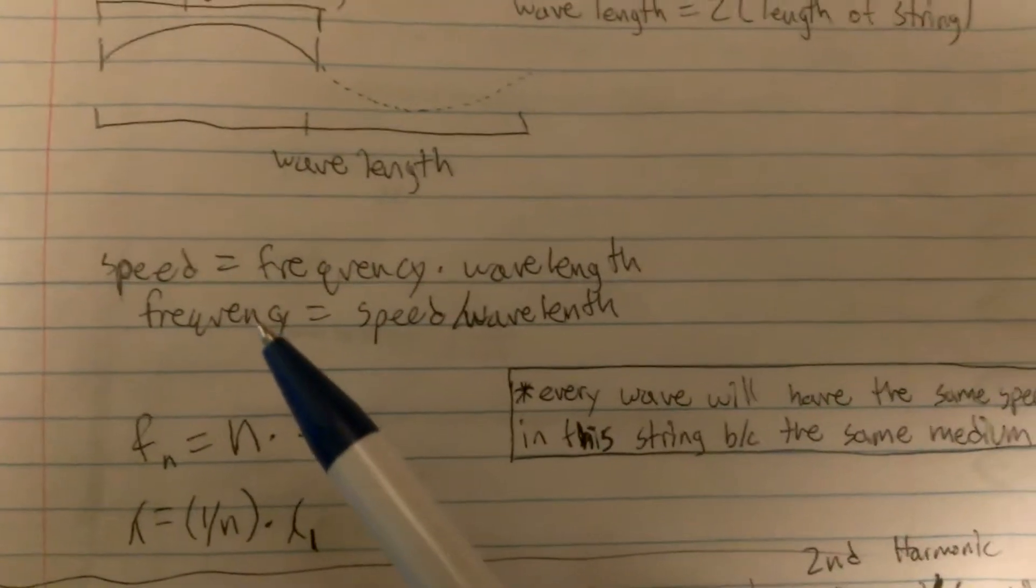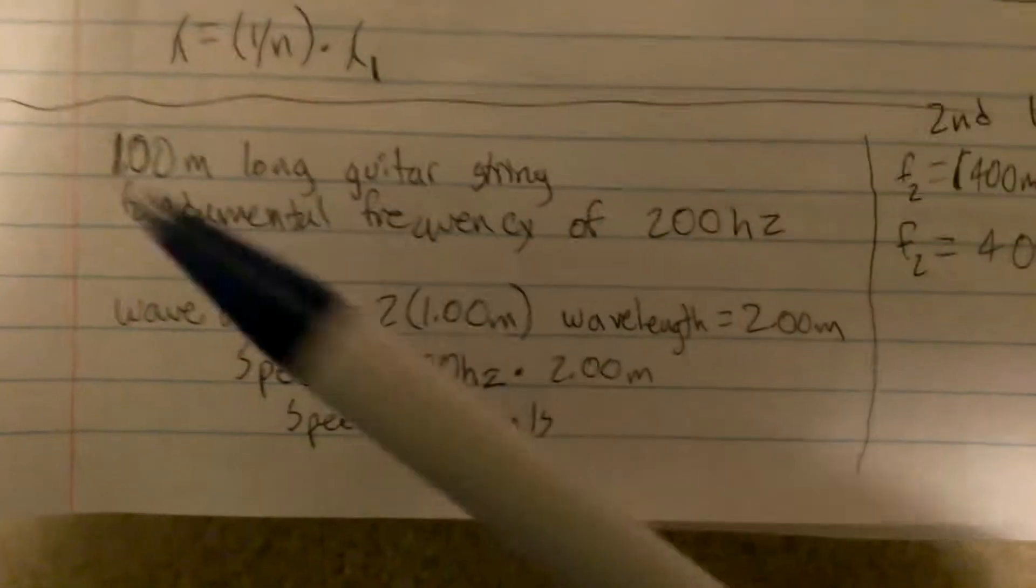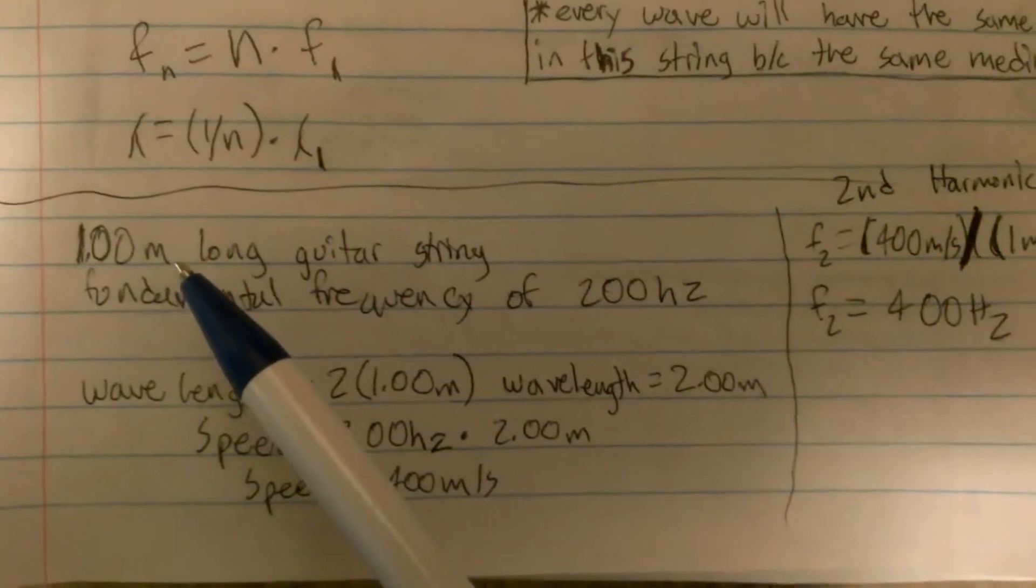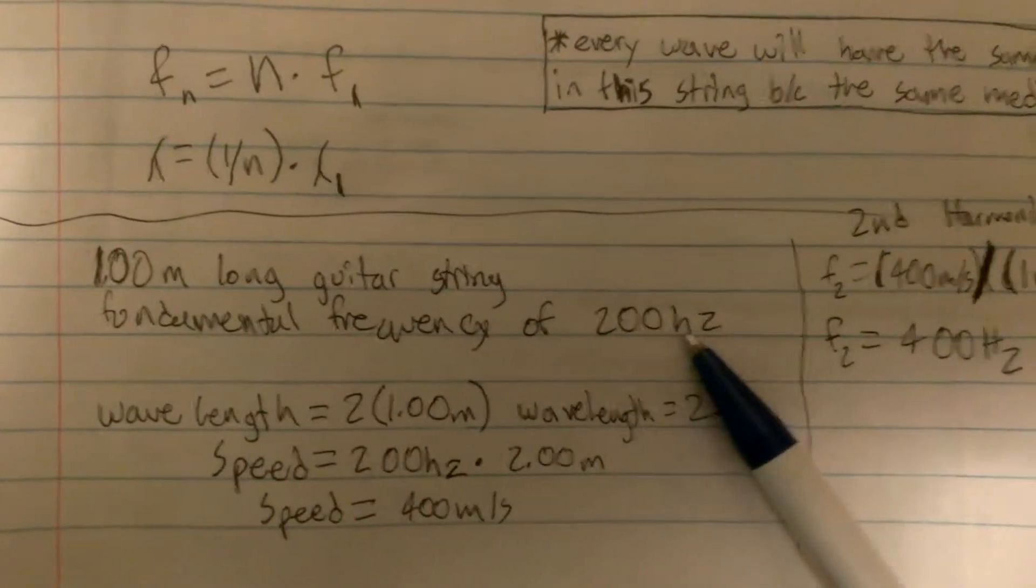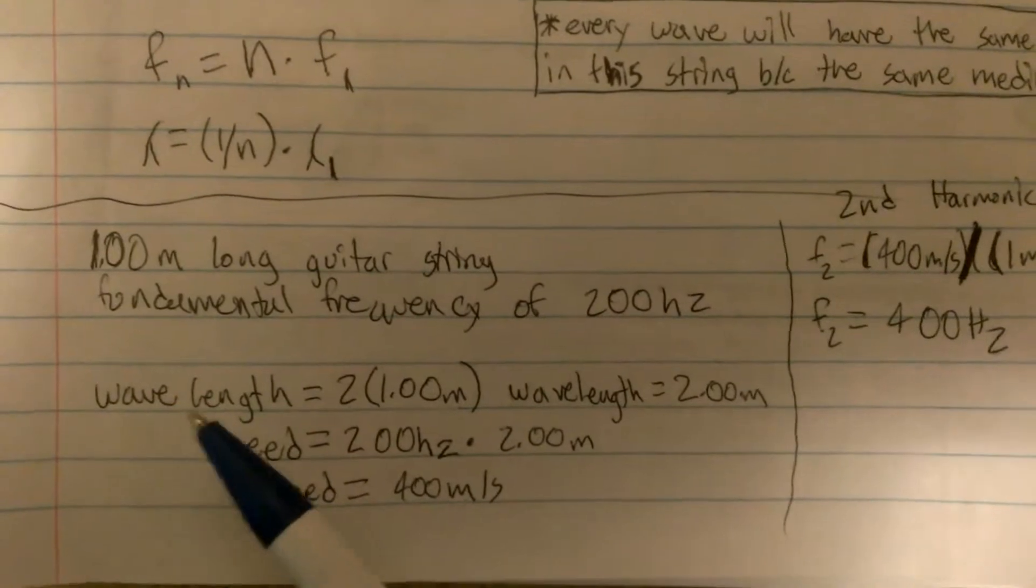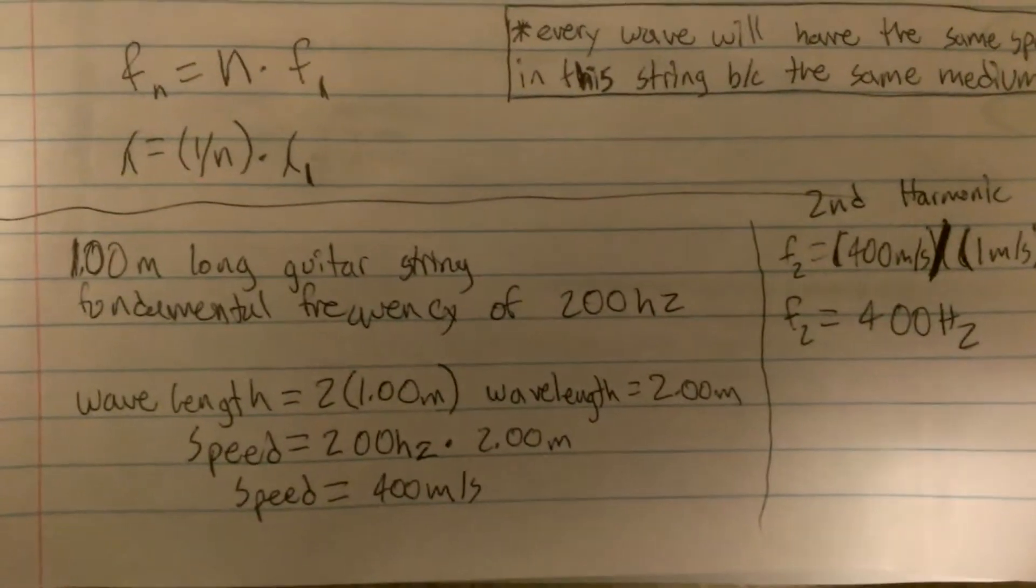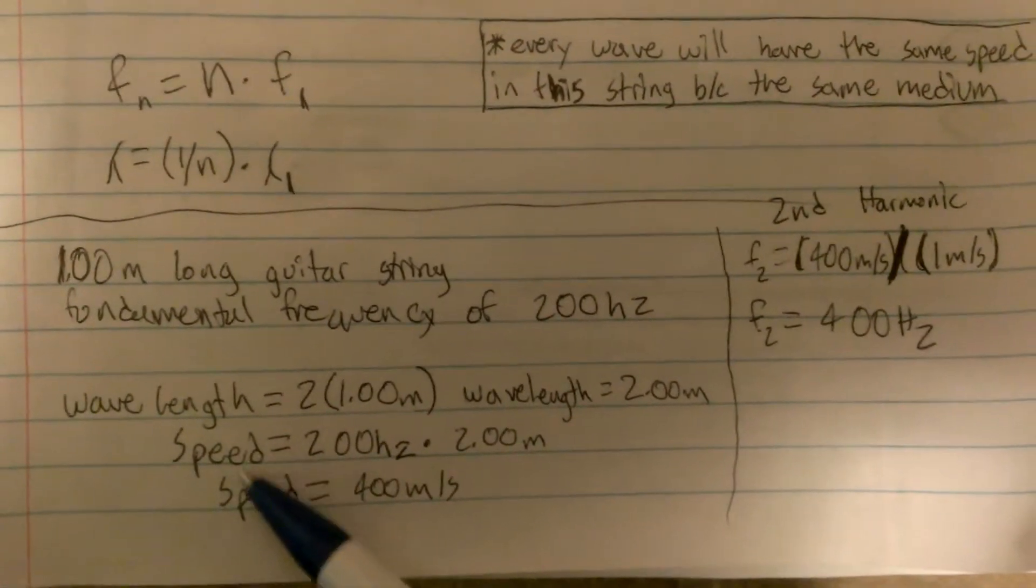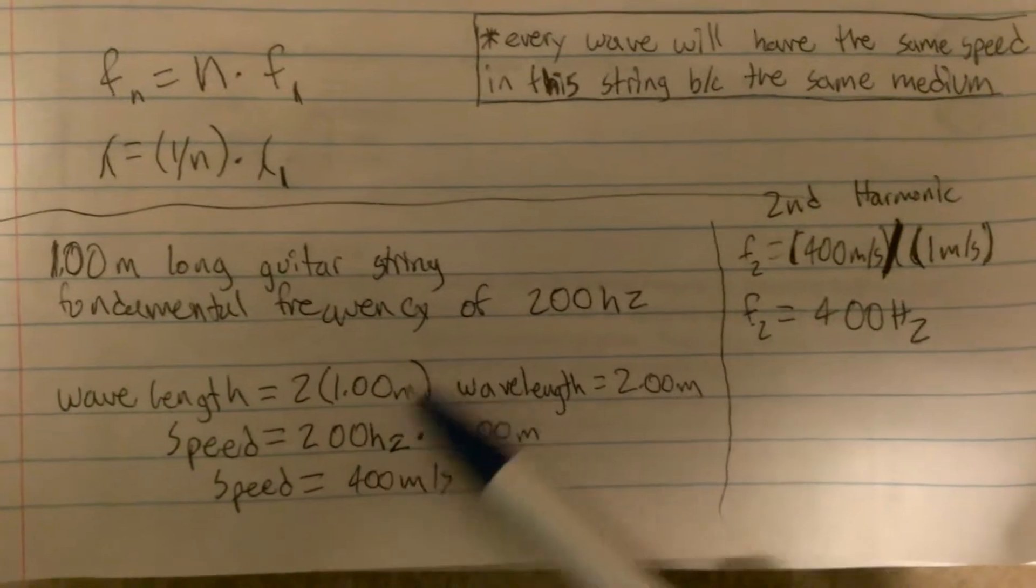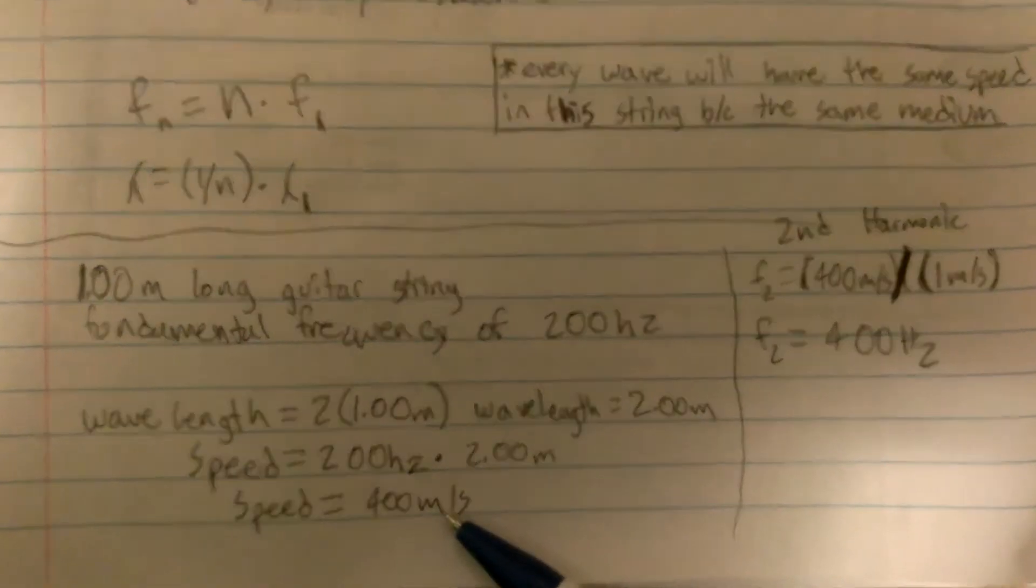And once you find the speed, then you're going to want to rearrange the equation so you can use it later to find the different frequencies for your different harmonics. So when you rearrange it, you're going to derive frequency is equal to the speed divided by the wavelength. Now, I've prepared a little example here. So, if you have a one meter long guitar string, and your fundamental frequency is 200 hertz, you will plug it in. Your wavelength is equal to two times the length of the guitar string, and you find that it's two meters. Then you do your normal equation, speed is equal to the frequency times the wavelength. Your speed comes out to be 400 meters per second.